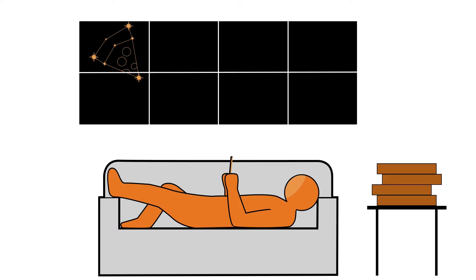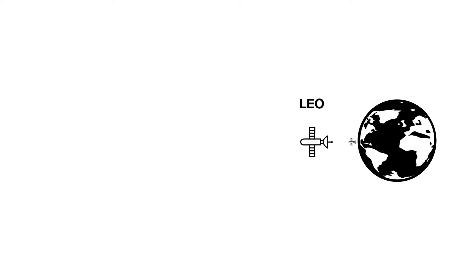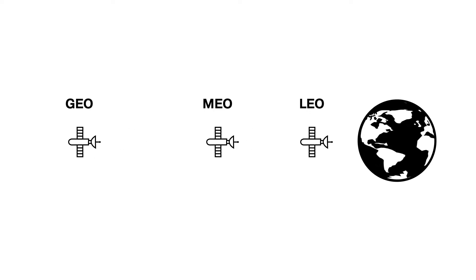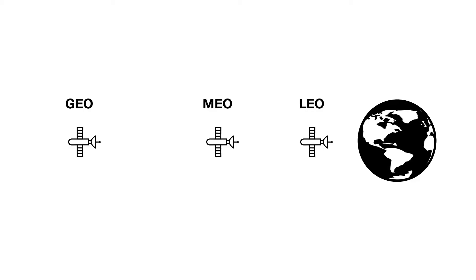There are three main categories of orbit that we have satellites in, and each one comes with different properties. And those three main categories are LEO, MEO, and GEO. But what are they, and what do they mean?